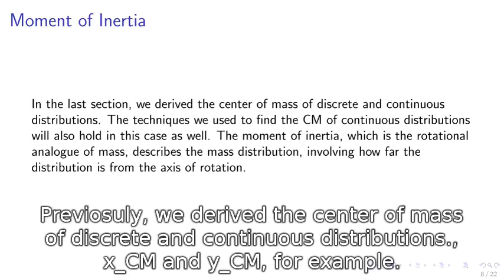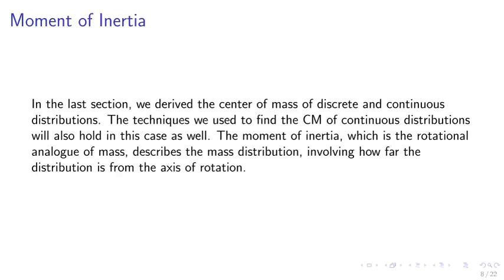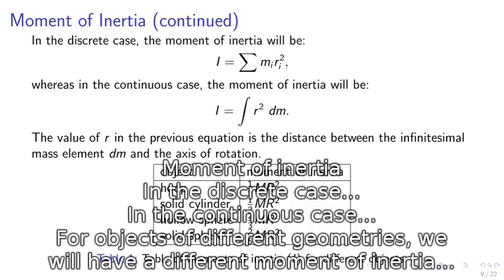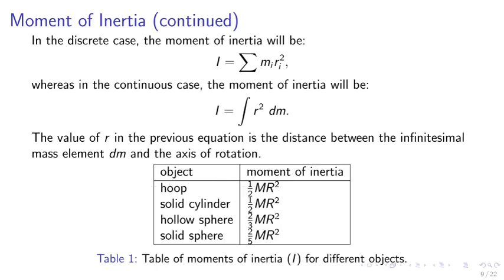Moment of inertia. Previously, we derived the center of mass of discrete and continuous distributions, x_CM and y_CM. The techniques used to find the CM of a continuous case will be used here as well. The moment of inertia, which is the rotational analog of mass, describes a mass distribution. In the discrete case, the moment of inertia is I equals sigma m_i r_i squared. In the continuous case, I equals the integral of R squared dm, where R is the distance between the infinitesimal mass element dm and the axis of rotation. Objects with different geometries will have different moments of inertia.